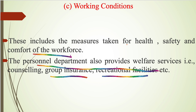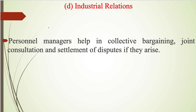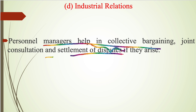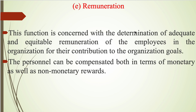The next operative function is industrial relations. Personal managers help in collective bargaining, joint consultation, and settlement of disputes if they arise. It is important for the personal manager to maintain peace and amicable relationships among employees through different types of methods.